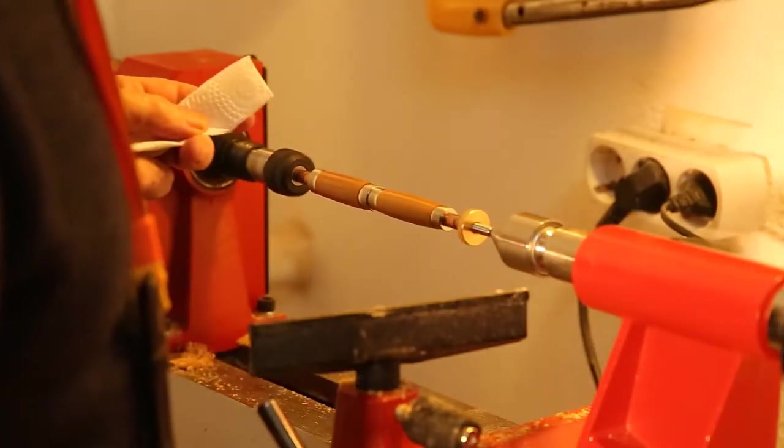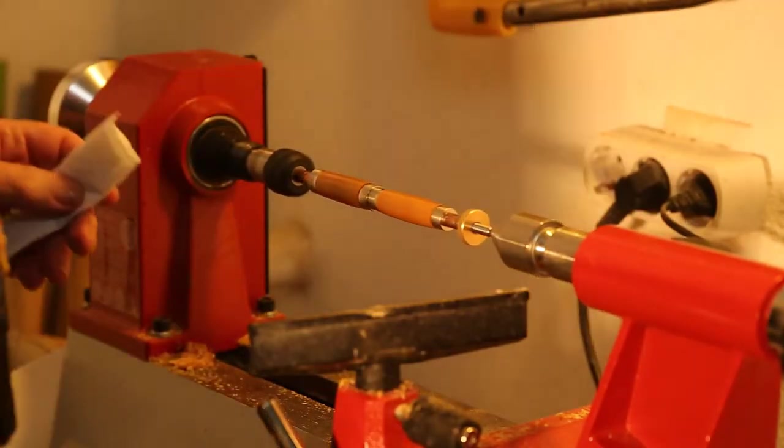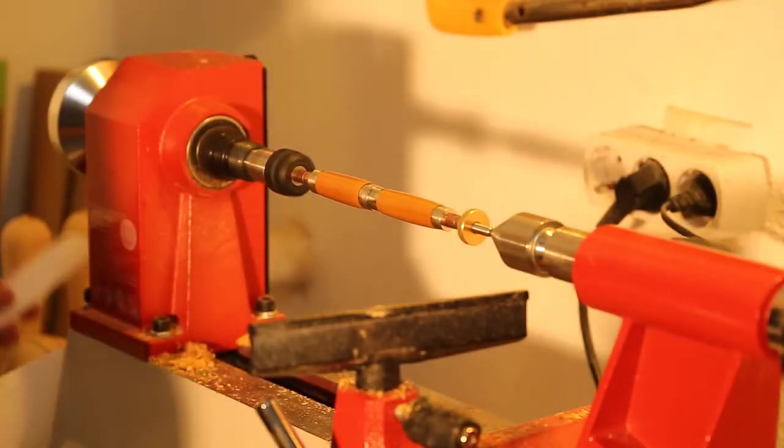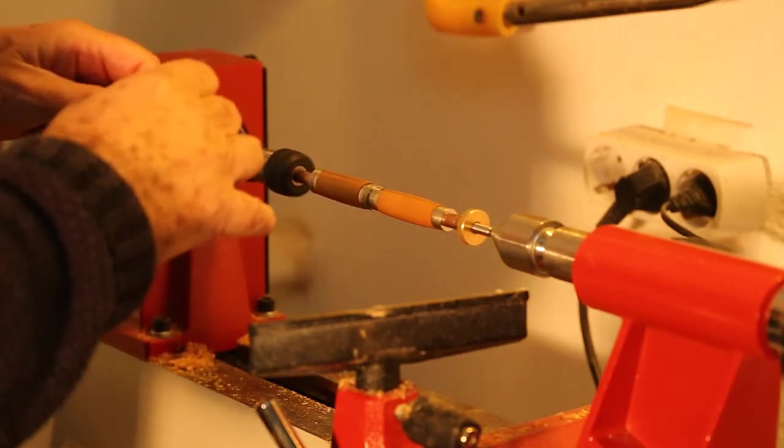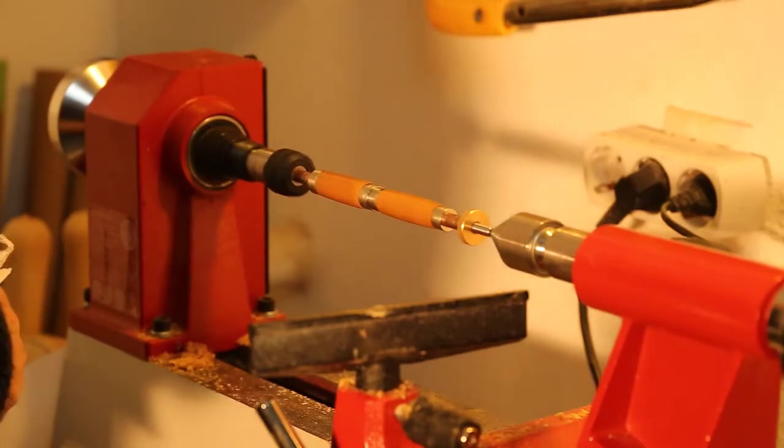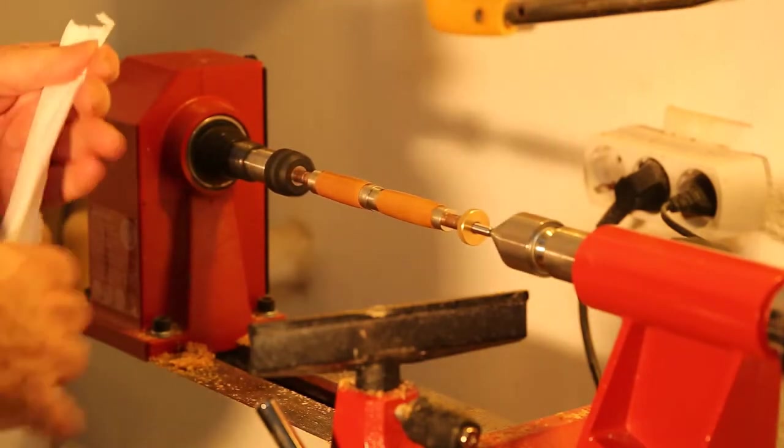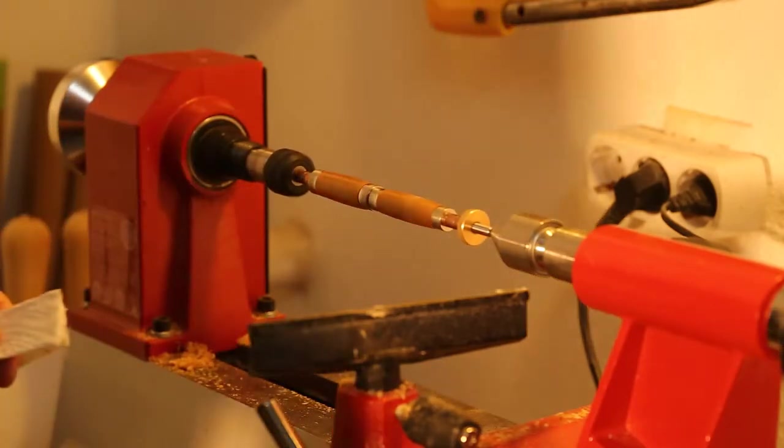Once you have that on, give it a spray of the activator and that will get it hardened. Let it spin for a few minutes, and I always tear off the part that has been used because it can stick to your fingers and you'll have paper stuck on your fingers for the rest of the week.